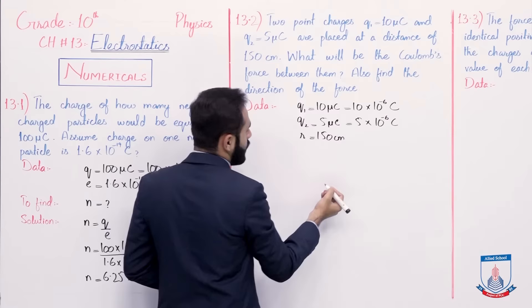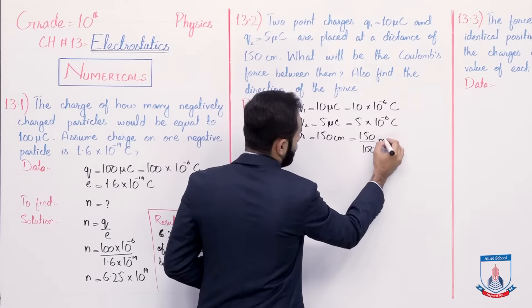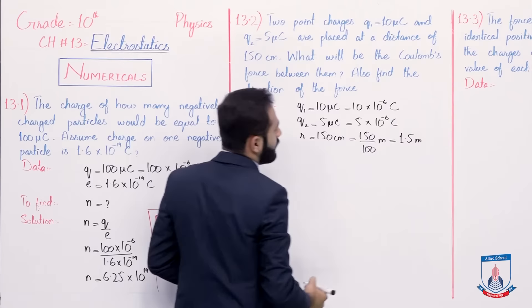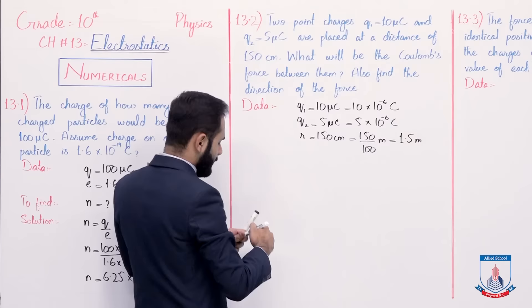Now the distance r that is 150 centimeter. Isko aap meter me convert kar lein. Meter me convert kis tarhaan se karte hai? Isko 100 se divide karke. So divide karenge to answer aajayega 1.5 meter. And similarly aapne find kya karna hai? That is force.